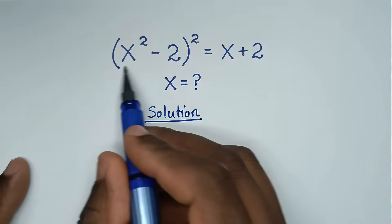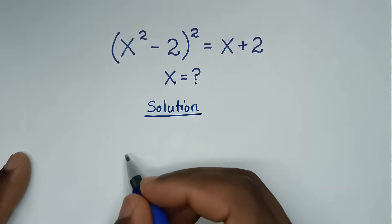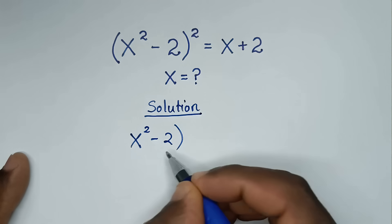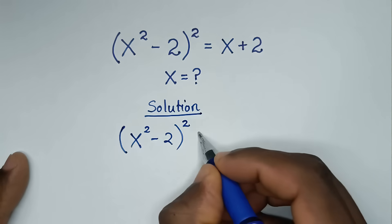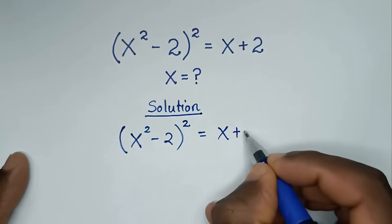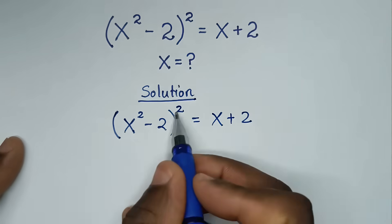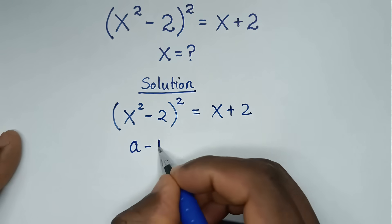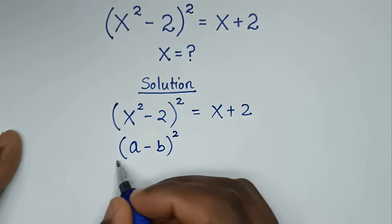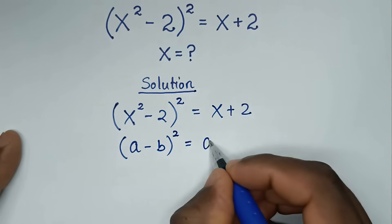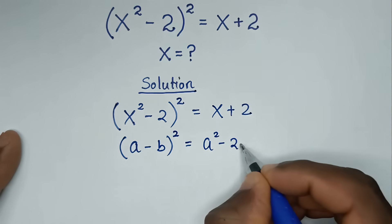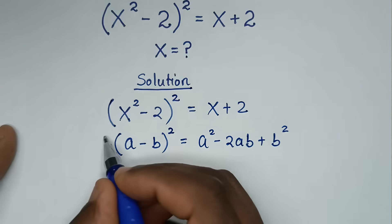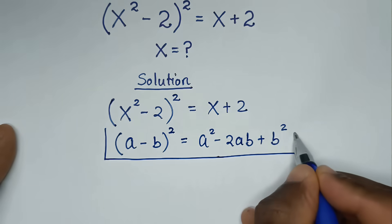To solve this problem, we have two methods. Our problem is (x² - 2)² = x + 2. From this part here, it's in the form of (a - b)², so to expand this, it is equal to a² - 2ab + b². We'll apply this rule.